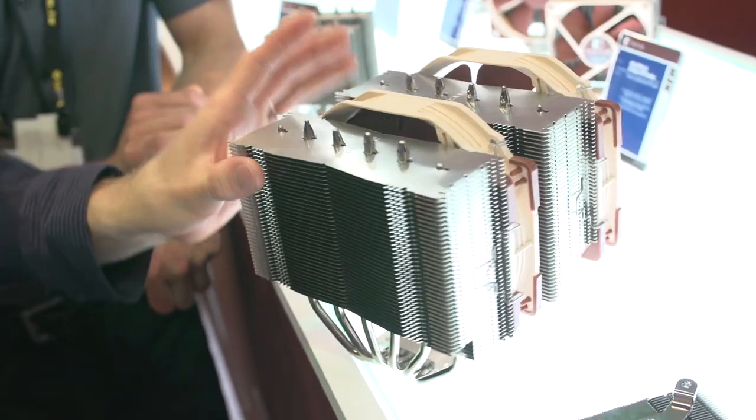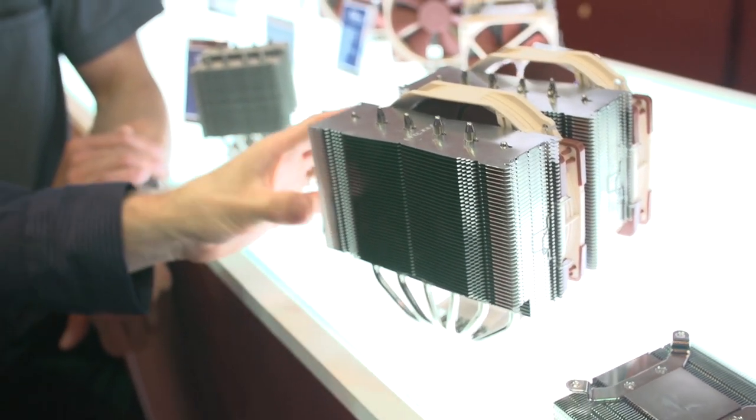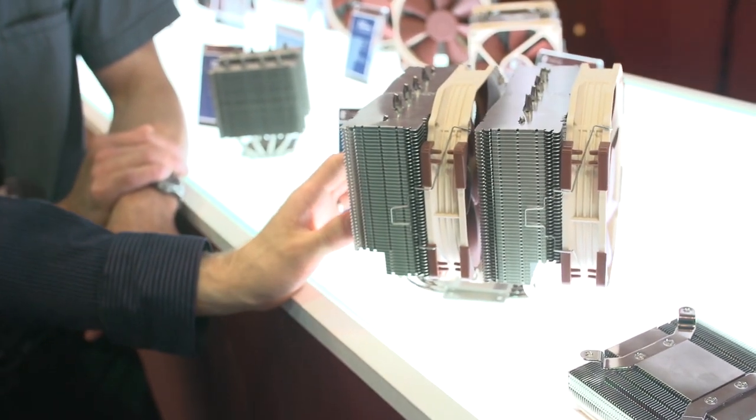Now, the original D14 had some compatibility issues from time to time with high-profile memory and this, if being even wider, how do you address that? Yes, we have these little cutouts here and if you drop the front fan, you can actually install RAM modules with up to 70mm height. So, if you're willing to sacrifice a tiny bit of performance, this cooler gives you actually more flexibility as far as high RAM heat spreaders are concerned than the original NH-D14.